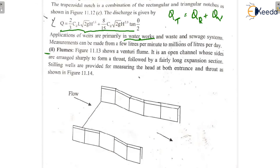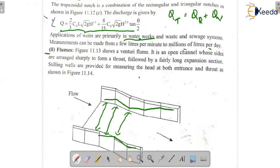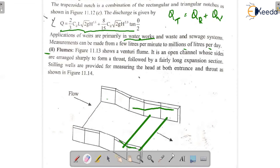Flumes are open channels whose sides are arranged to form a throat section. The throat section is followed by a long expansion. This structure forms what is called a throat, and beyond it is a long expansion section. Multiple types of flumes share this arrangement of a throat followed by long expansions.